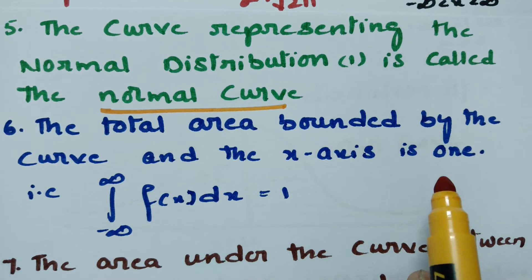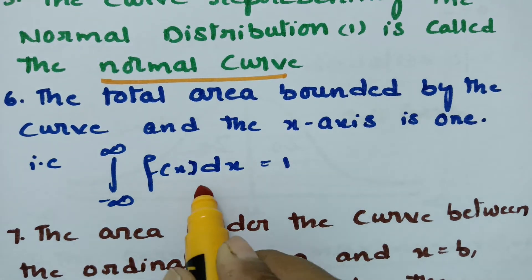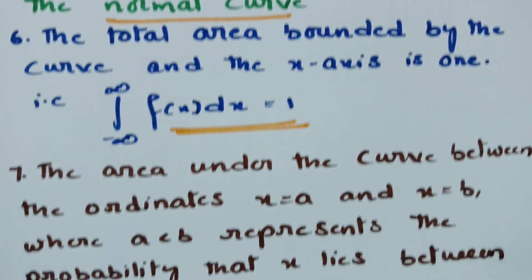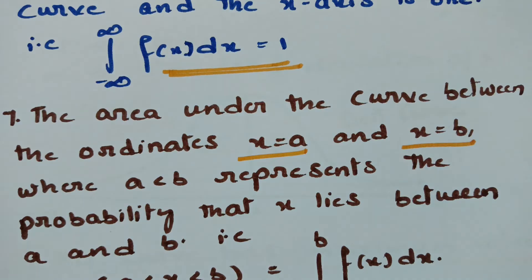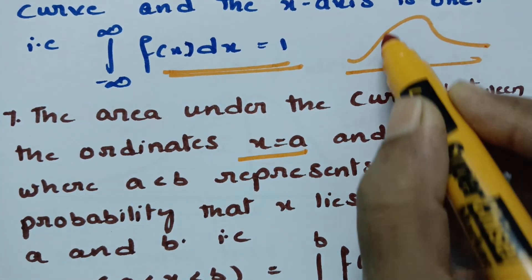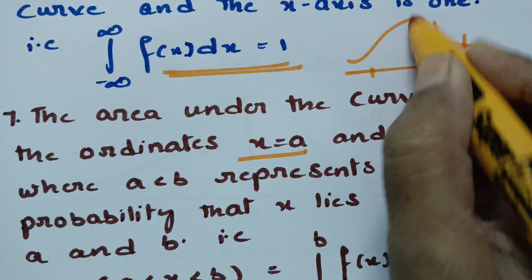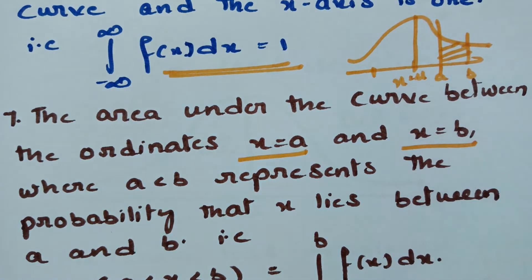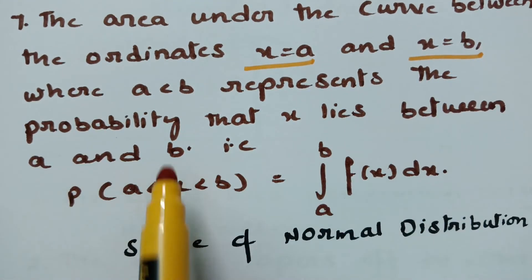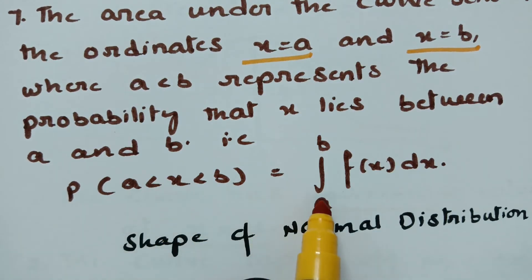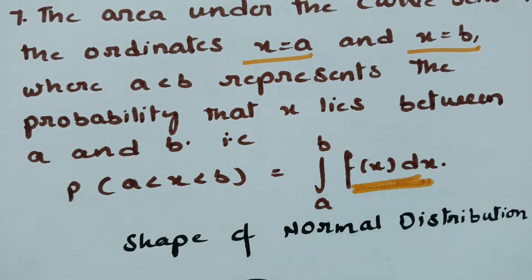The total probability from −∞ to +∞ always remains unity — this is the basic property for probability. The area under the curve between ordinates x = a and x = b, where a < b, is represented by the probability that x lies between a and b, that is P(a < x < b) = ∫[a to b] f(x) dx. This is how we find the area.